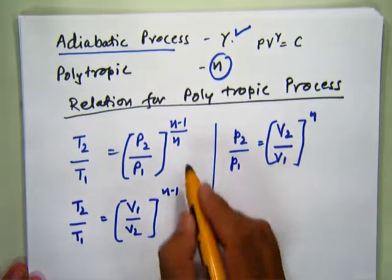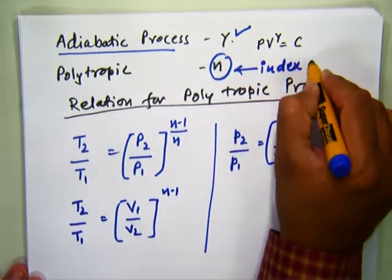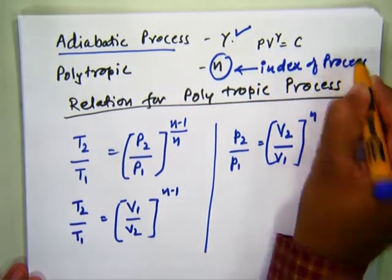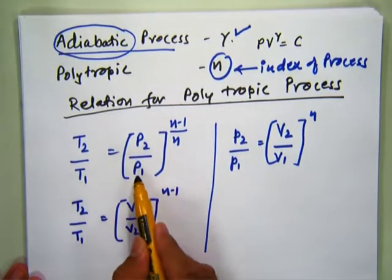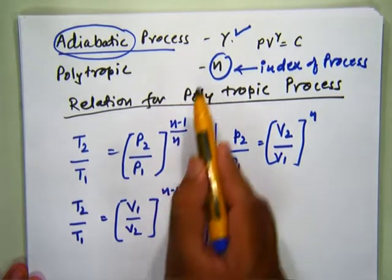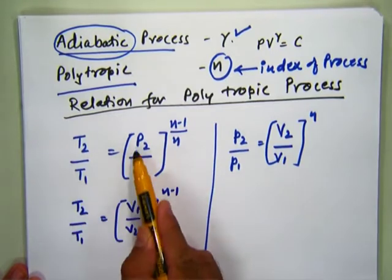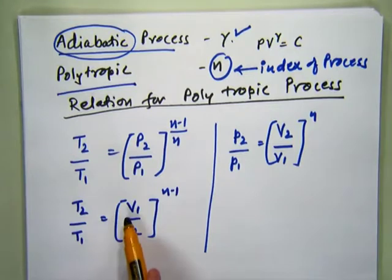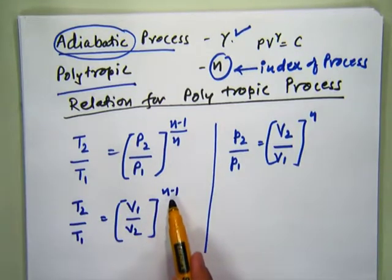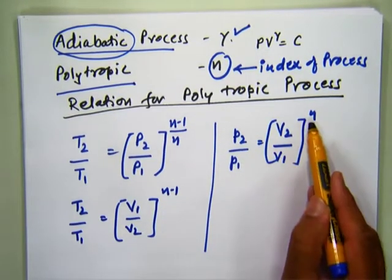Where n is the index of the process. In the adiabatic process we derived T2/T1 = (P2/P1)^((γ-1)/γ). Gamma replaced by n in the case of polytropic process gives T2/T1 = (P2/P1)^((n-1)/n). Similarly, T2/T1 with volume gives (V1/V2)^(n-1), and the relationship between pressure and volume gives P2/P1 = (V2/V1)^n.